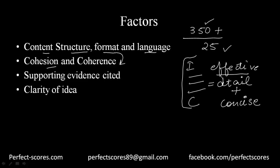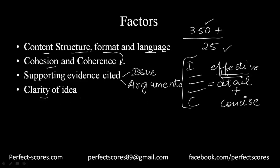The third important factor is the supporting evidence you cite in your essay. For 'Analyze an Issue' essays, you need real-world examples, and the quality of those examples affects your score. For the argument essay, the kinds of counter-arguments you build, the faulty premises, and other flaws you can identify all play a big role in your AWA score.